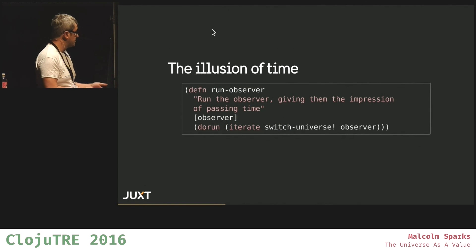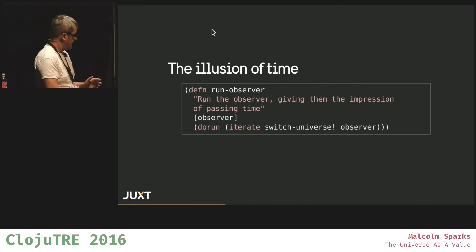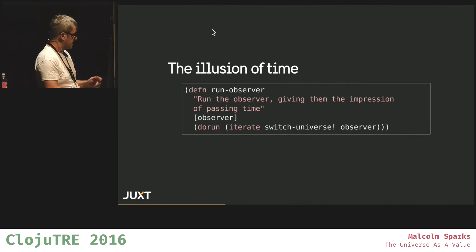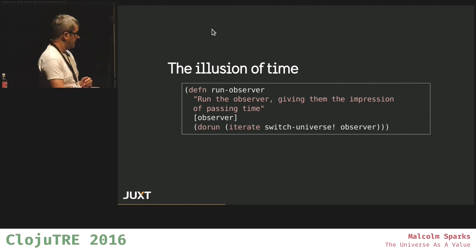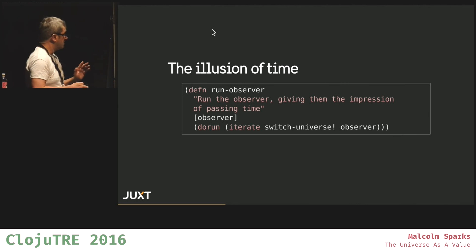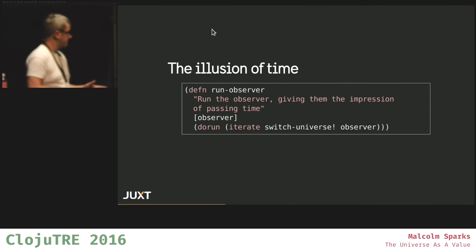So we'll have the computing resources. And here we can create the illusion of time, which is an iterate switch-universe on the observer. So we're calling switch-universe and creating a whole sequence of universes, and we're running do-run. This is where we've created, finally, the illusion of time.